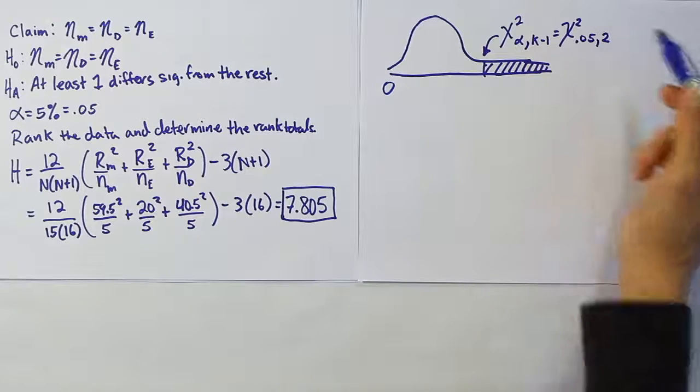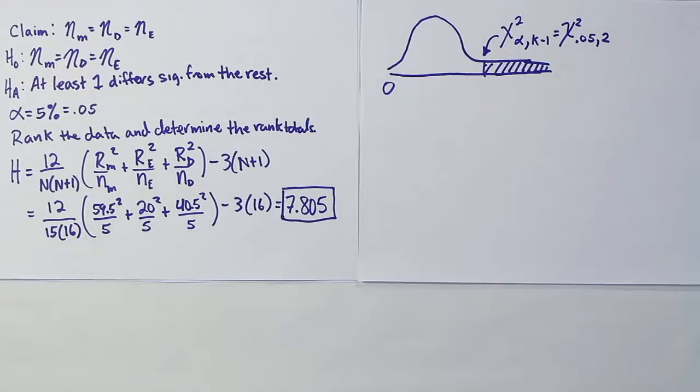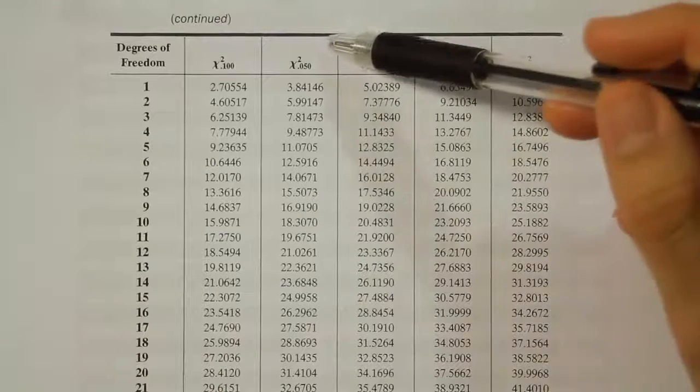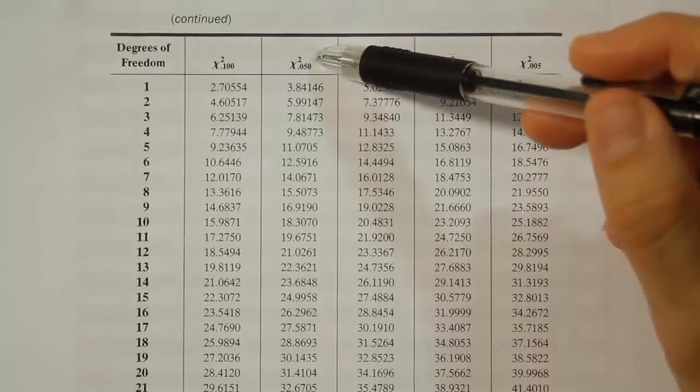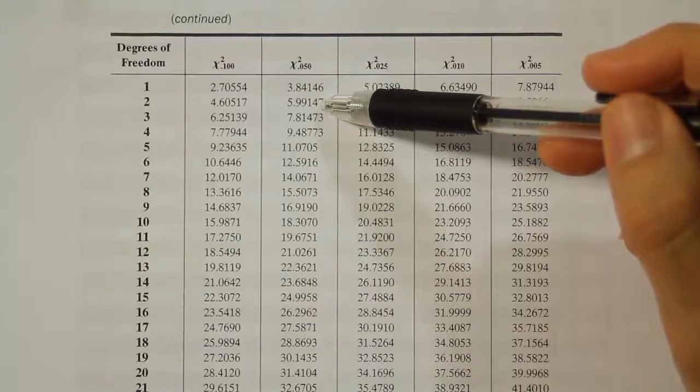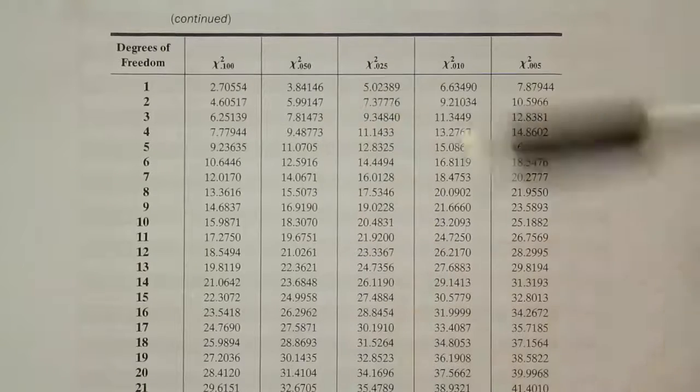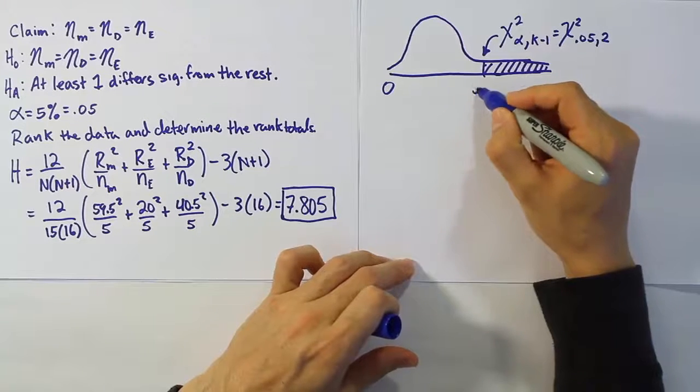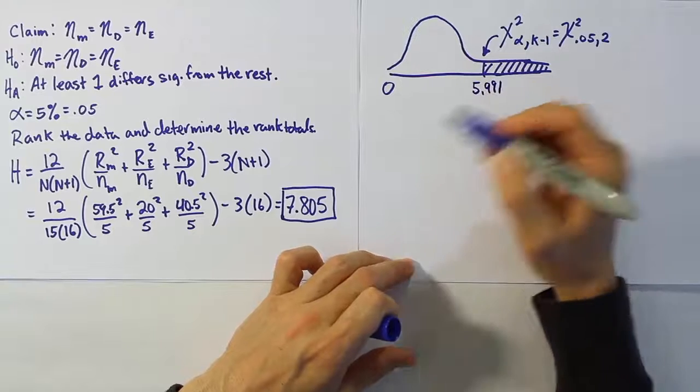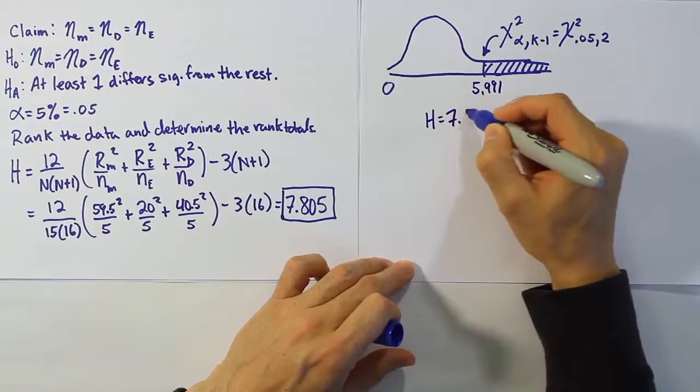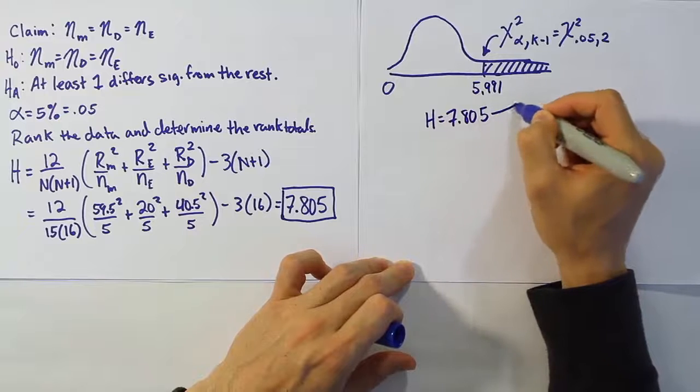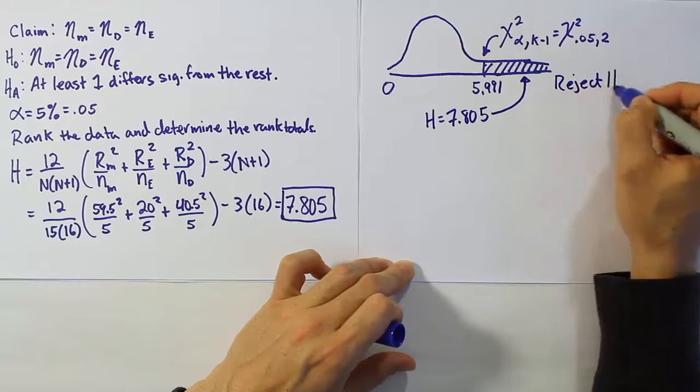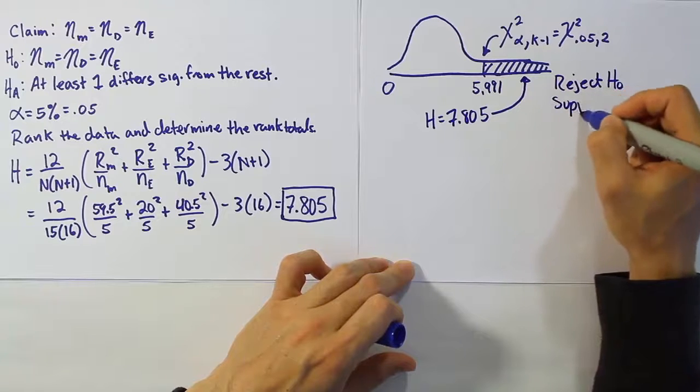We're on the chi-squared table looking at .05 with 2 degrees of freedom. We find the answer 5.99147. So our critical value is 5.991. Now if we compare our test stat, which is H equals 7.805, we see that that value falls in the rejection region. So we're going to say that we should reject H0 and therefore support HA.